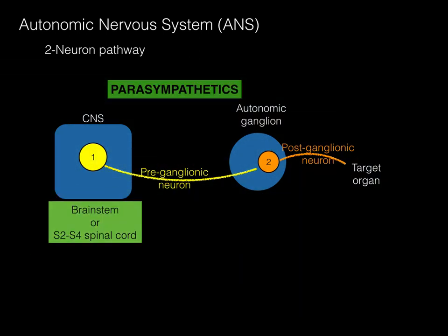For parasympathetics, the CNS origin is always the brainstem — midbrain, pons, medulla — or the sacral spinal cord at S2, 3, and 4. This is because parasympathetics primarily innervate smooth muscle of the gut tube, which due to the way the gut tube folds cranially and caudally comes from the top and the bottom. The vagus nerve is the primary brainstem origin of parasympathetics, arising from the medulla, while the sacral spinal cord S2, 3, 4 handles the hindgut and pelvic region. All of the peripheral autonomic ganglia for parasympathetics — where the postganglionic neurons arise — are the intramural ganglia, meaning ganglia within the organ itself.